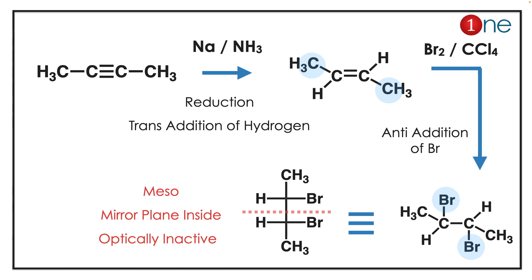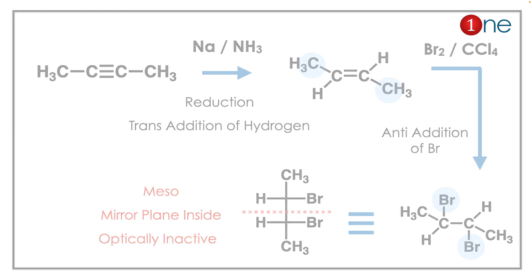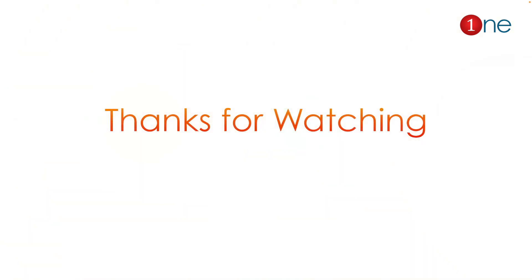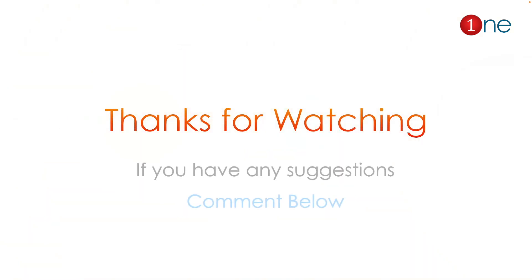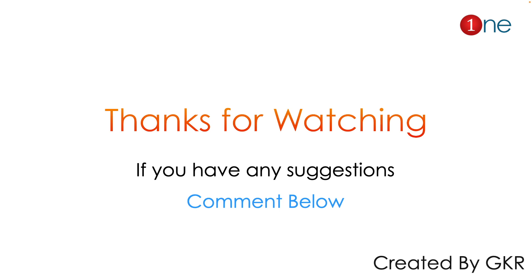The key concept here: sodium-ammonia addition to an alkyne is trans addition, and bromine addition to an alkene in CCl₄ is also trans (anti) addition. That's all from this video, thanks for watching.